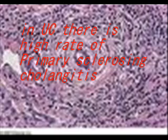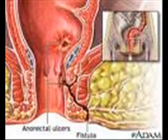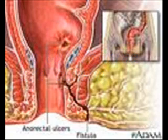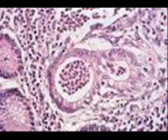There is an associated disease with ulcerative colitis called primary sclerosing cholangitis, which is highly associated with ulcerative colitis. On the other hand, fistulae are highly associated with Crohn's disease.